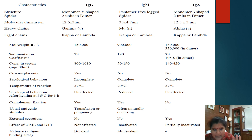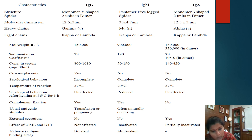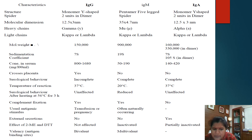Regarding crossing of placenta — this is very important. IgG crosses the placenta, so we can find IgG in the fetus, which will usually be from the mother. But IgM and IgA do not cross the placenta. IgG has a higher concentration in serum compared to IgM and IgA. Regarding temperature of reaction, IgG reacts at 37 degrees centigrade while IgM reacts at 20 degrees centigrade. Regarding complement fixation, IgG and IgM are very good at fixing complements, but IgA does not fix complements. Regarding the effects of 2ME and DTT, IgA is partially affected, IgM is totally inactivated, but IgG is not affected.